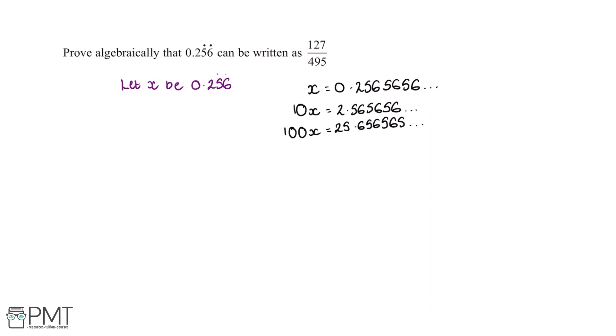And as we can see, this still doesn't match up to any of the values after the other decimal points. So we can multiply this again to 1000x, and this gives us 256.65656 and so on.